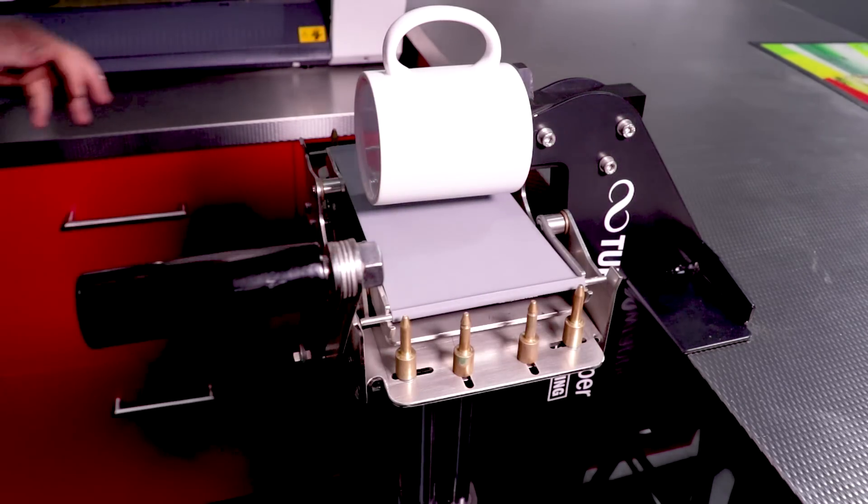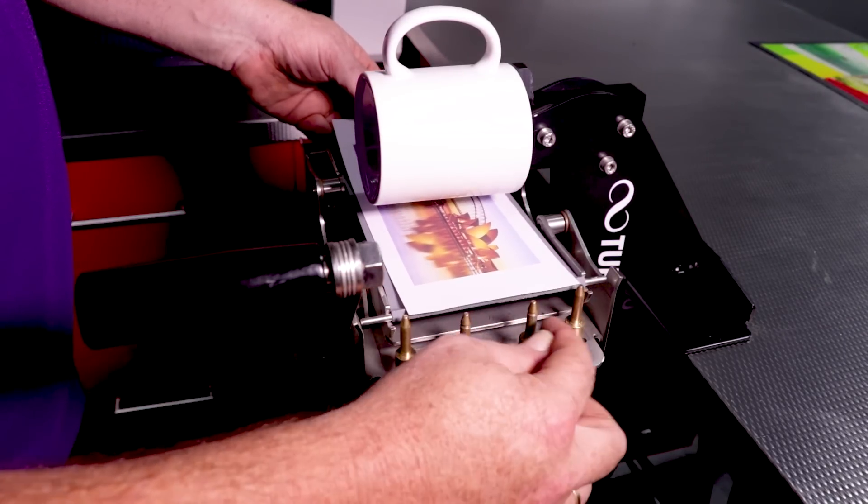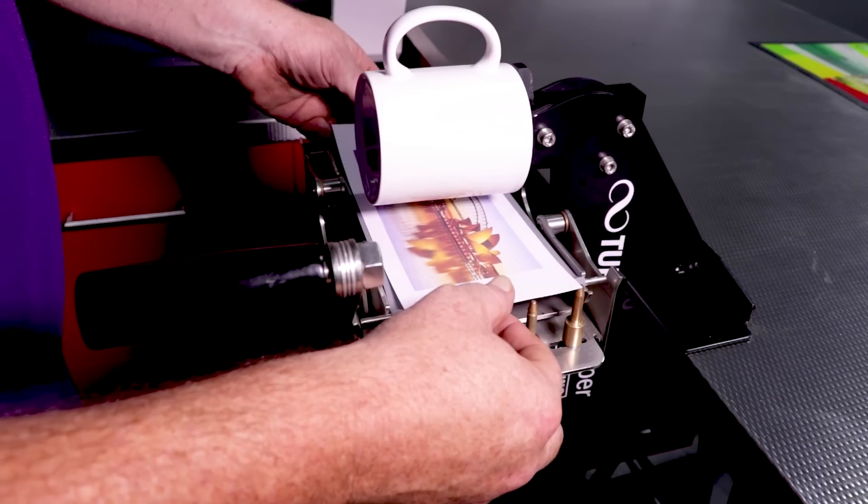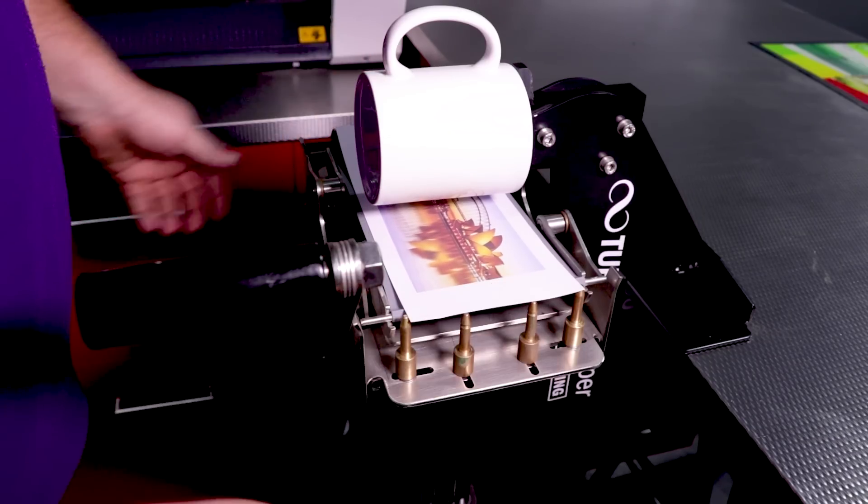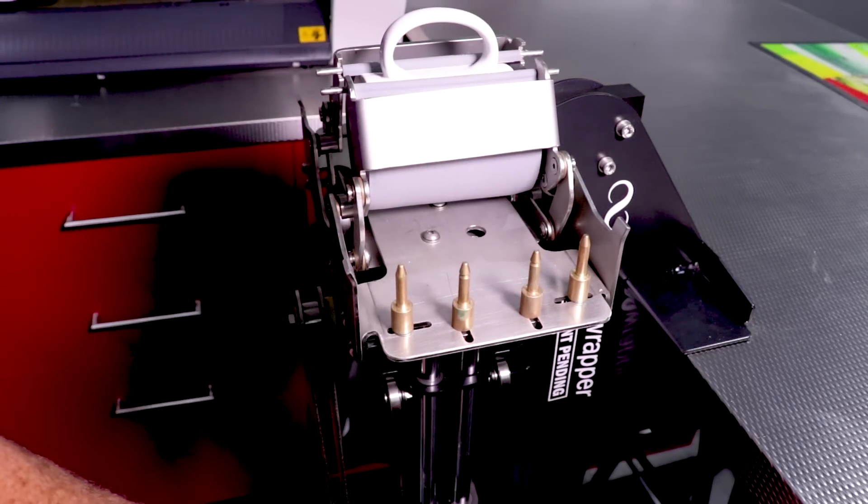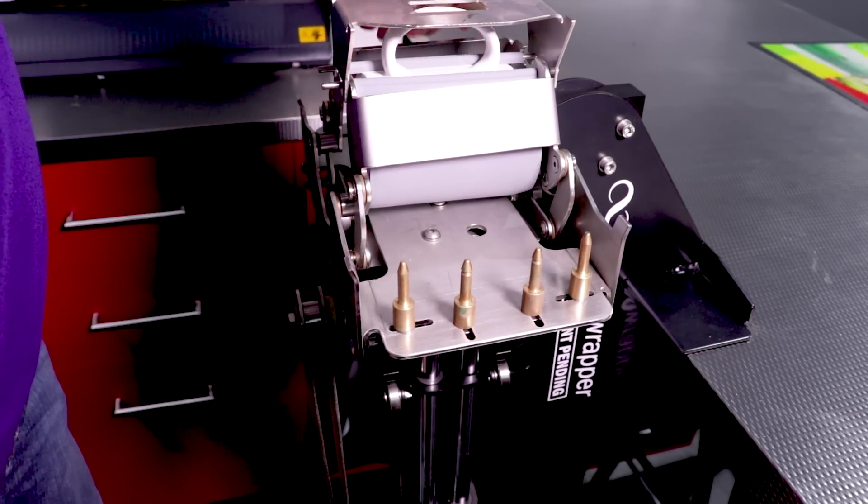Once that's on we put on the print, the fully adjustable guides on the side so we can have it in a perfect location every time. Once that is lined up it's just a matter of turning the handle and applying the print to the mug and using the clamp to hold it in place.